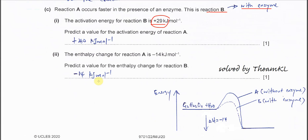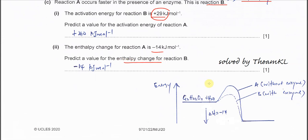Part two: the enthalpy change for reaction A is -14. Predict a value for enthalpy change for reaction B. First you need to understand the enzyme or catalyst will lower the EA. So let's say this is the EA for A. When the enzyme is used, then the EA lowers and becomes this EA for B.